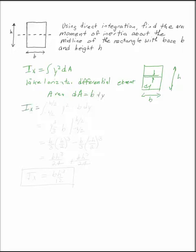I can plug that in. Ix is the integral of y squared times b dy. My limits of integration are going to be from negative h over 2—that's where y starts—to h over 2.